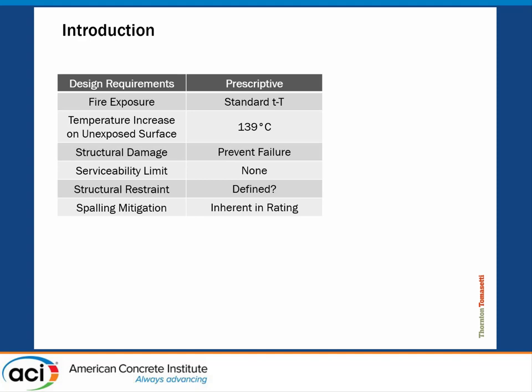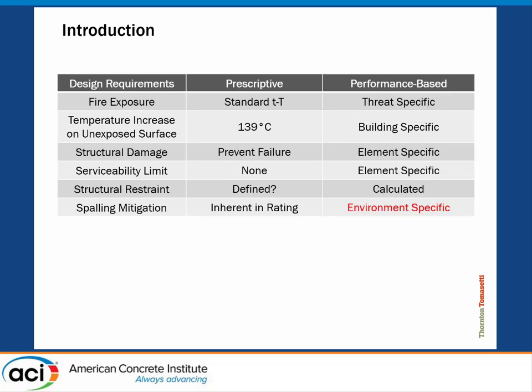What we're really interested in is spalling mitigation. If structural failure is simply defined as loss of load-carrying capability, you could have spalled a ton — several inches of spalling — and it's still not failed. Or you could have no spalling and it did fail. The failure limit is a temperature rise of 139 degrees Celsius. So what happened to concrete spalling? Where did it go, and is it even embedded in any of our fire resistance ratings?